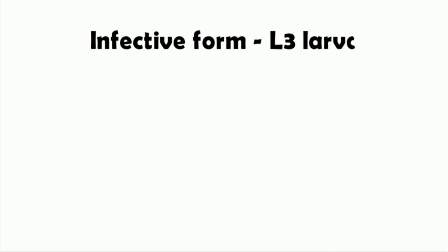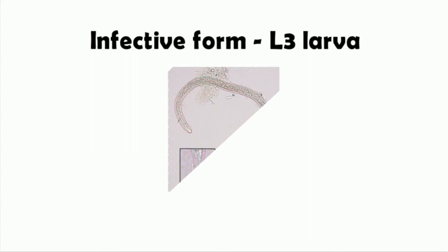In the life cycle of Dracunculus medinensis, the infective form of the worm is the L3 larva, which is called the filariform larva. This is a must-know fact. I am going to show you a picture of the L3 larva. This is how an L3 larva of Dracunculus medinensis looks like under a microscope.